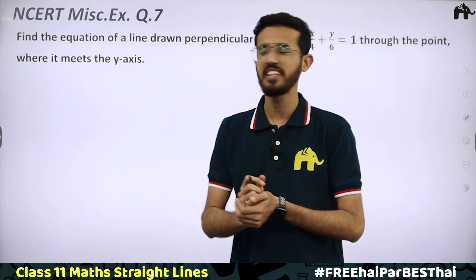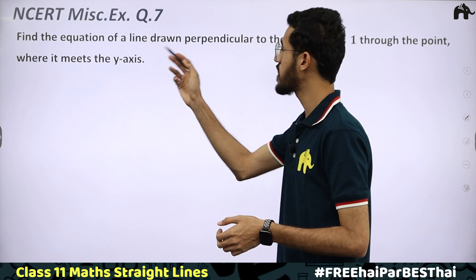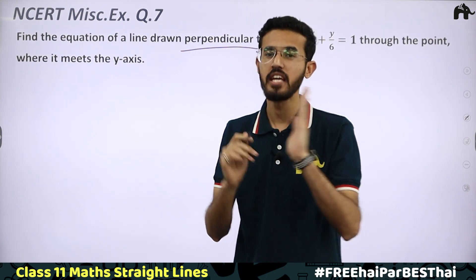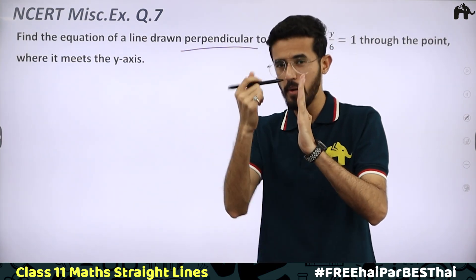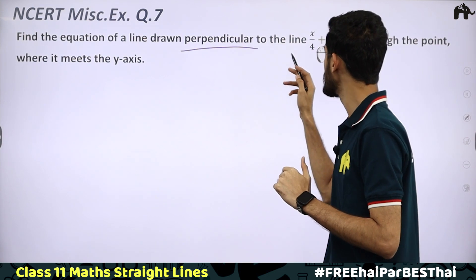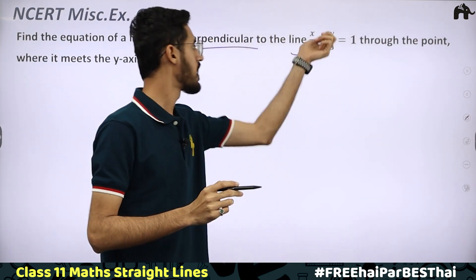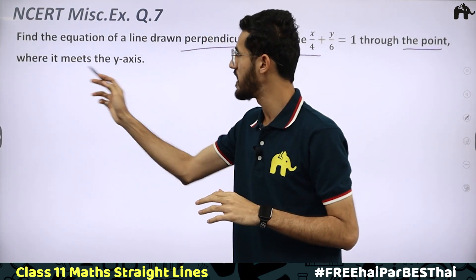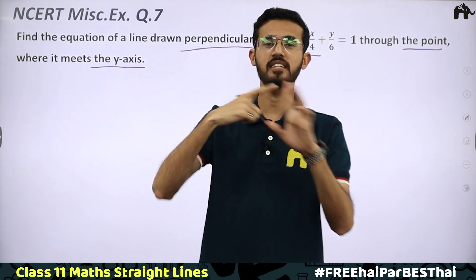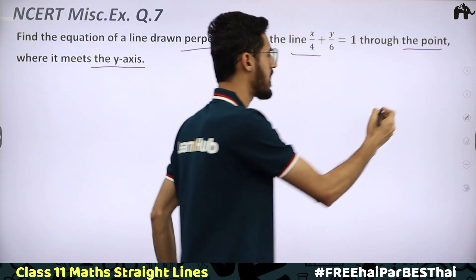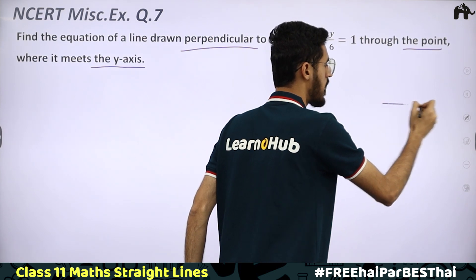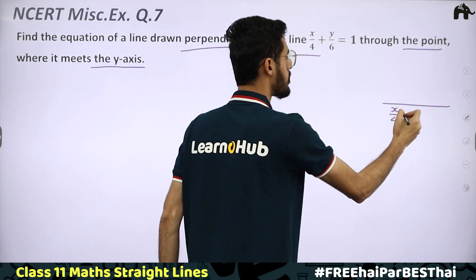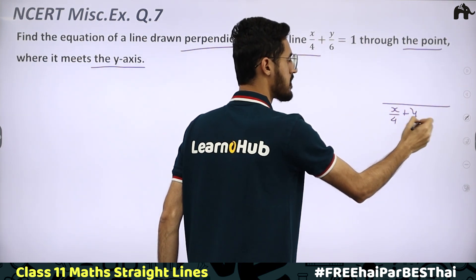Question No. 7: Find the equation of a line perpendicular to x/4 + y/6 = 1, through the point where it meets the Y-axis. Our required line is perpendicular to x/4 + y/6 = 1 and passes through the point where that line meets the Y-axis. On the Y-axis, the x-coordinate is 0, so the point is (0, y).